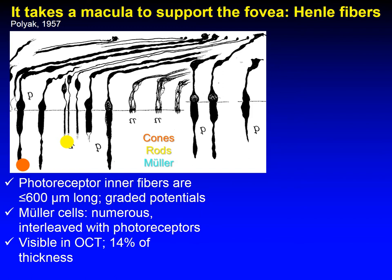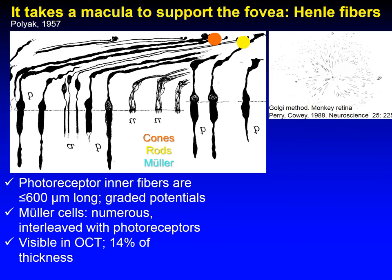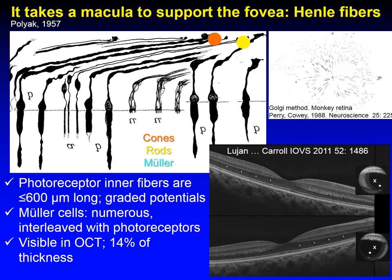It takes a macula to support the fovea. I want to highlight the Henley fiber layer. The ganglion cells that transmit parallel pathways of information from the cone photoreceptors to the brain are very numerous, and the photoreceptors project laterally to the bipolar interneurons so that all the cells can fit in around the foveal pit. In a Golgi stain, these inner fibers of cones, rods, and Mueller cells, which are interleaved, can be up to 600 microns long, and the photoreceptors have unique electrical properties. The Henley fiber layer is visible in OCT with directional lights and consists of 14% of total macular thickness.